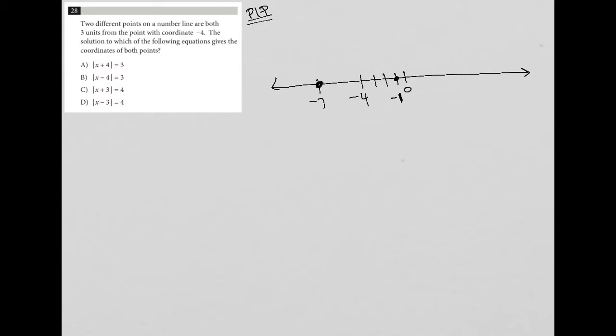OK, so we are told that there are two different points. We're told that those points are both three units from negative four. So I'm pretty confident that our answer should be negative seven and negative one.